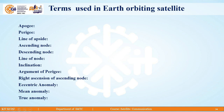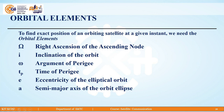We need to understand the key terms used in earth-orbiting satellites: apogee, perigee, line of apsides, ascending node, descending node, line of nodes, inclination, argument of perigee, right ascension of ascending node, eccentric anomaly, mean anomaly, and true anomaly. To find the position of a satellite, we need to know the orbital elements: Ω (right ascension of ascending node), i (inclination of the orbit), ω (argument of perigee), tp (time of perigee), eccentricity of the elliptical orbit, and semi-major axis of the orbital ellipse.